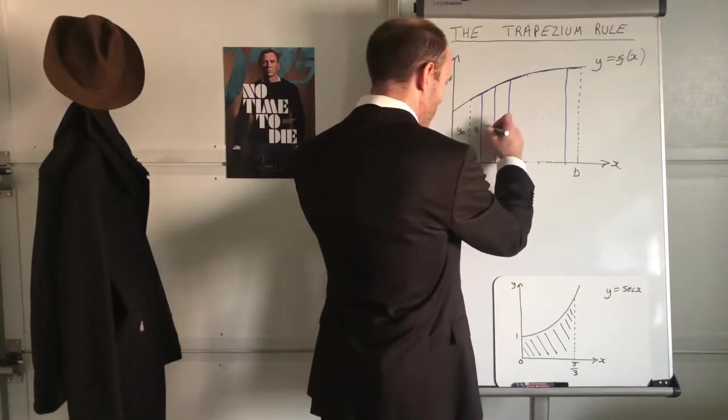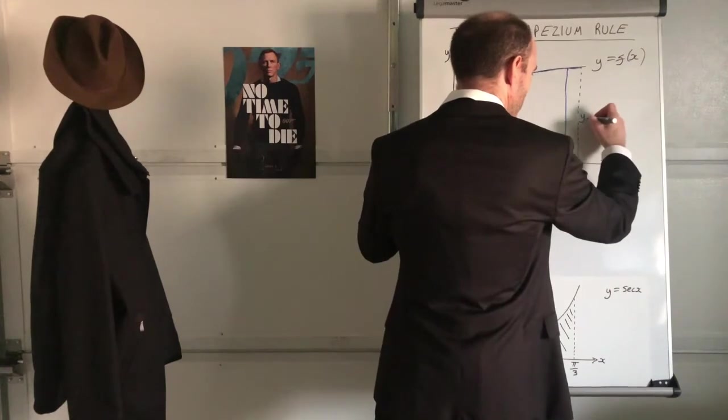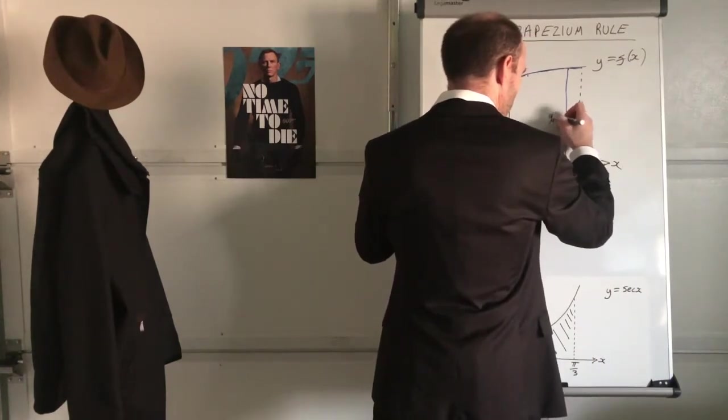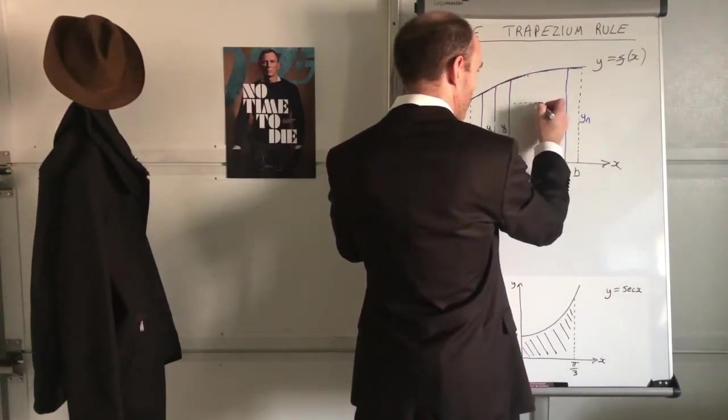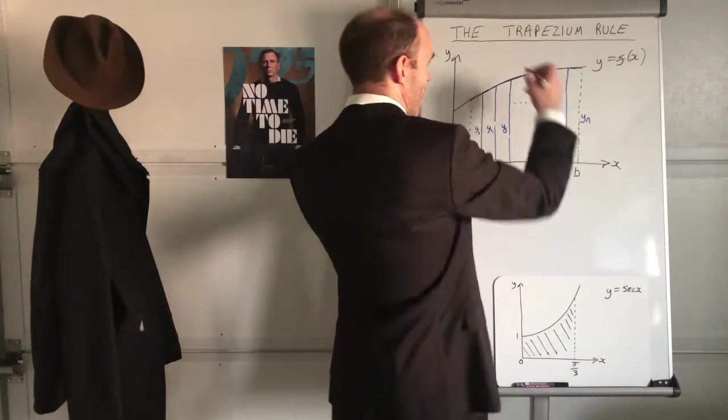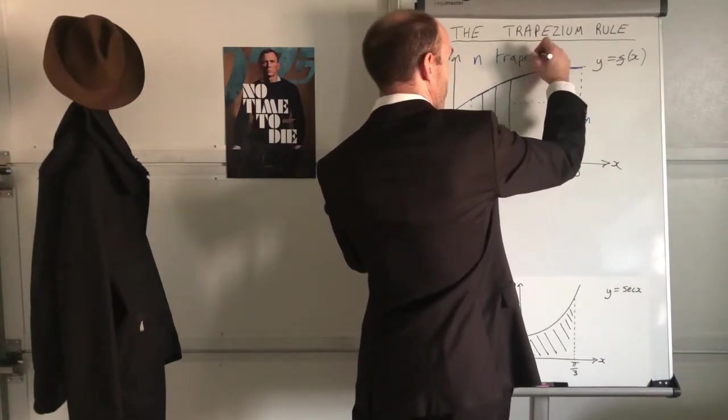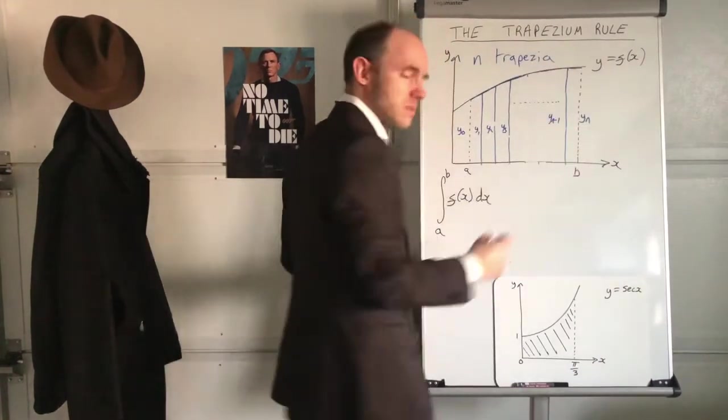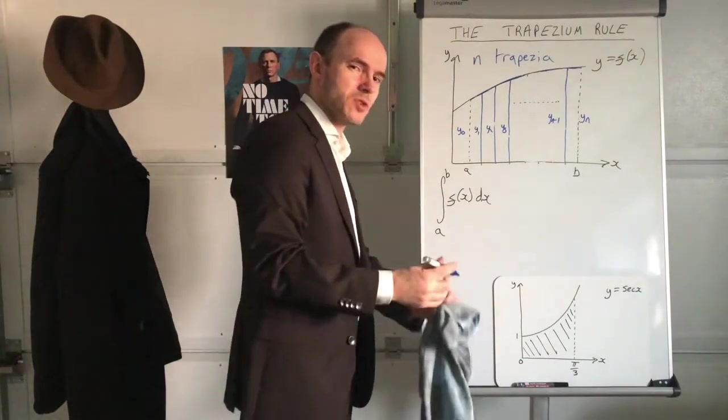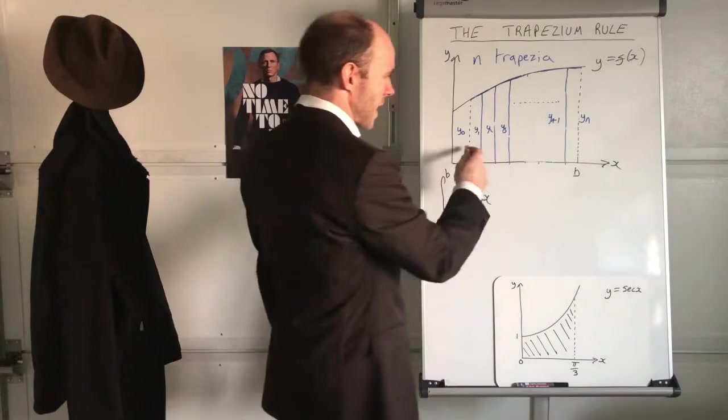What I'm going to do for the moment is say I'm going to divide it up into n strips. That one at the end will be yn, yn minus one. I'm going to put dot dot dot there to represent all the strips in between, so I've got n strips. I should strictly write down n trapeziums, it's not quite correct, it's trapezium or trapezoids if you're American.